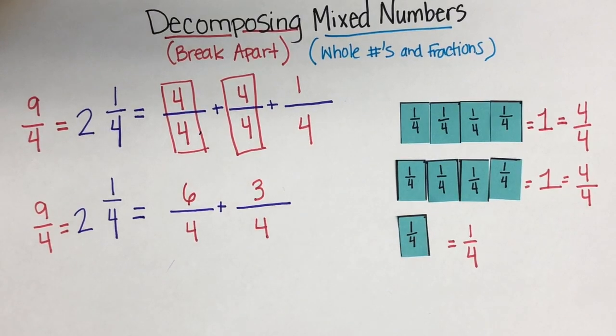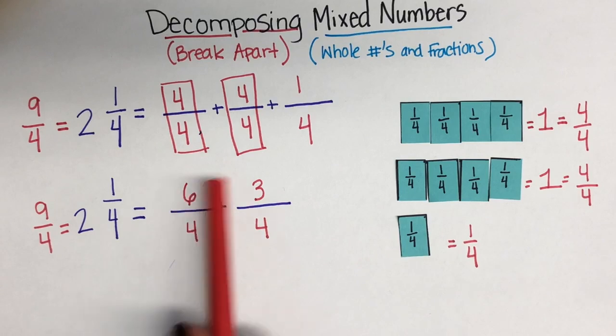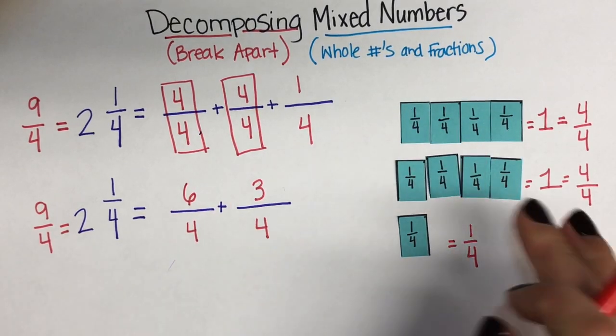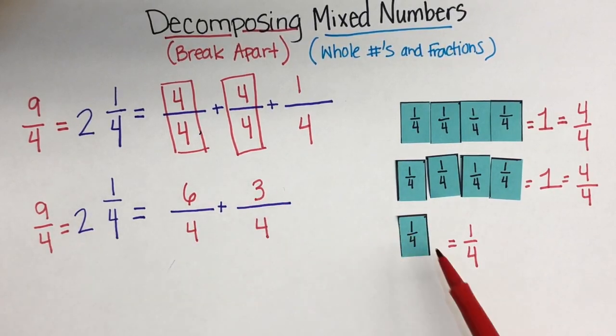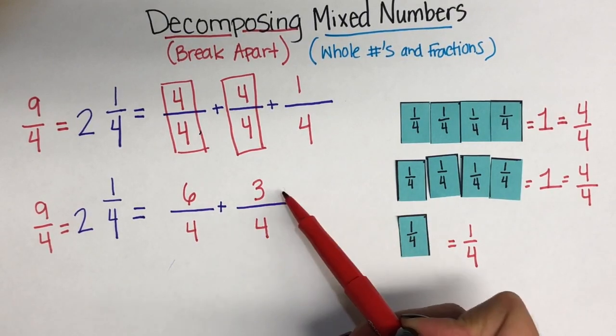Ooh, I bet you all saw that coming. 6 plus 3 makes 9. So, if I add those 2 fractions, I have 1, 2, 3, 4, 5, 6 fourths plus 1, 2, 3 fourths makes 9/4.